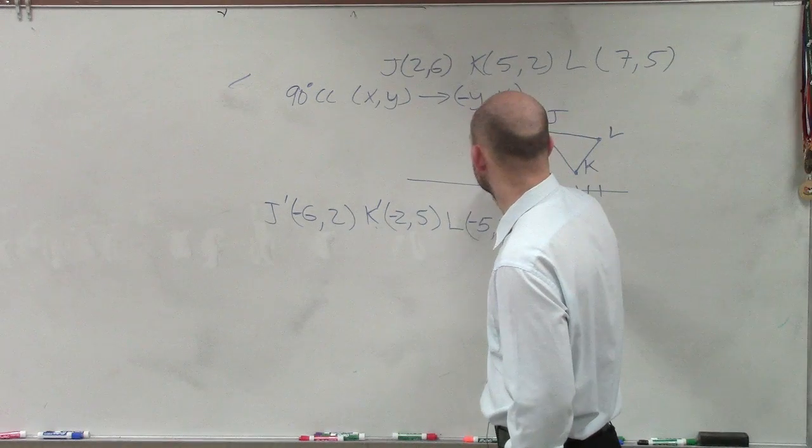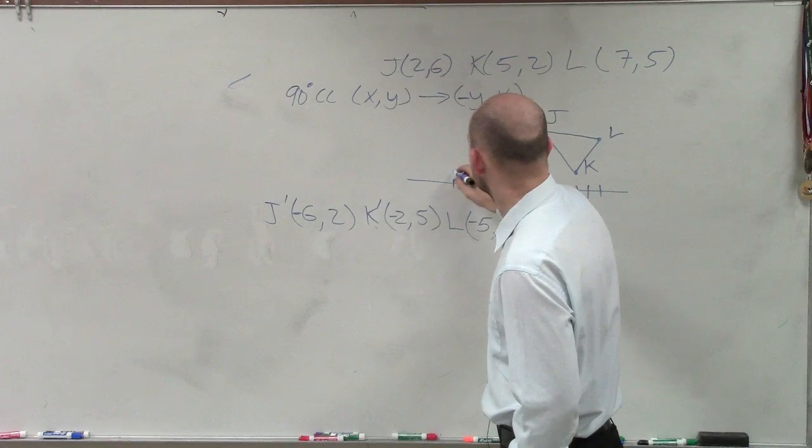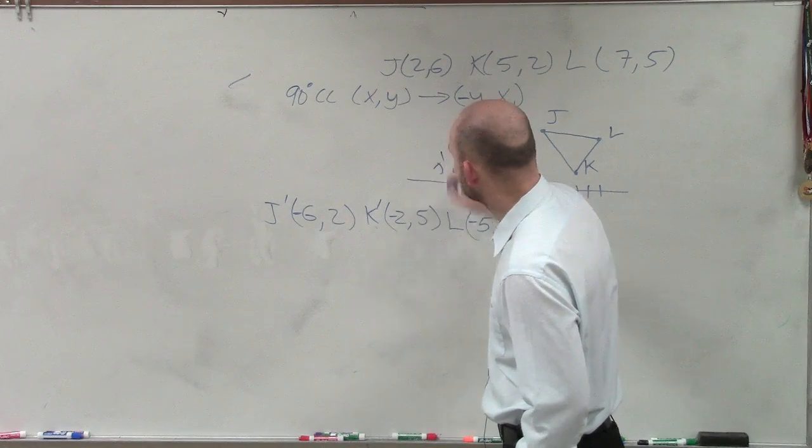So I have negative 6, 2. 1, 2, 3, 4, 5, 6, 2. That's now J prime.